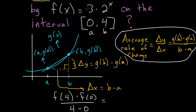And evaluating the function at 4, we just put in a 4 here. So we get 3 times 2 to the 4 minus the function evaluated at 0, which is 3 times 2 to the 0, all divided by 4 minus 0, which is 4.